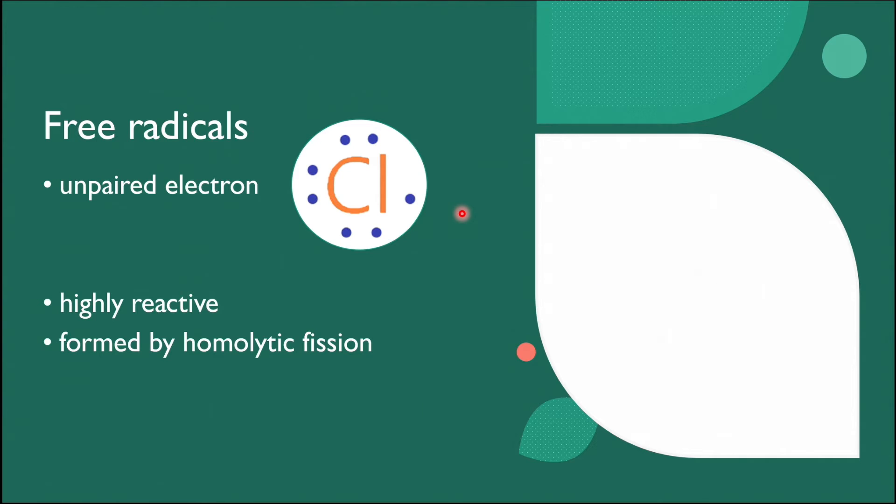In this example, one of the bonding electron pairs is transferred to one chlorine atom and the other is transferred to the other chlorine atom. Because there is only one electron transferred to each atom, fish hooked arrows are used.